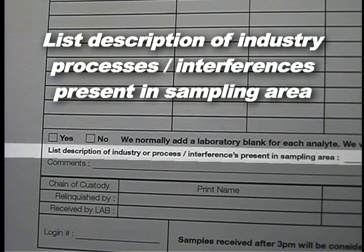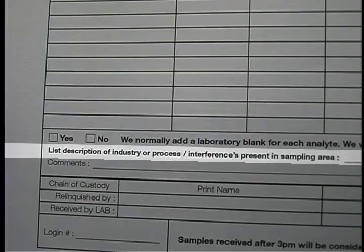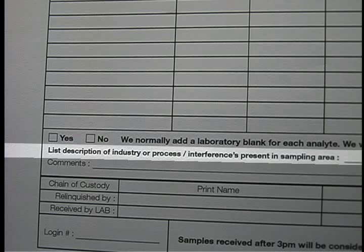List description of industry processes and interferences present in sampling area: Provide a brief list of the process associated with the samples — for example, hexavalent chromium has different holding times for plating, welding, or painting — or any other information that may interfere with the analysis, like other volatile compounds, other metals, dust, odors, humidity, and the like. This information is often critical to appropriate analysis. For example, if concrete, limestone, or calcium carbonate were present during silica analysis, we need to know that, as these materials may create interferences that would bias the analysis. A special acid treatment prior to analysis will be performed if we know this information.